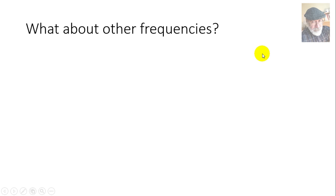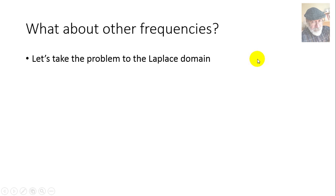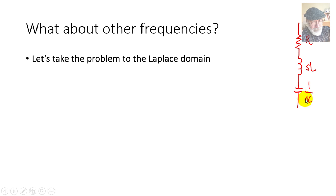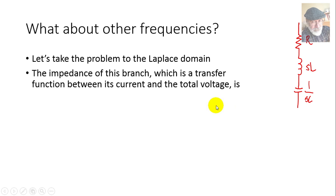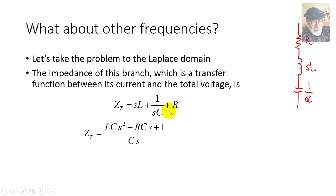To find out what happens to other frequencies, we take the problem to the Laplace domain. The series RLC circuit is represented by Laplace impedances R, sL, and 1/sC, with no sources and no initial conditions — no trapped energy in the inductor or capacitor. The impedance of that branch is a transfer function between the current and the voltage, given by the series combination of the three impedances.